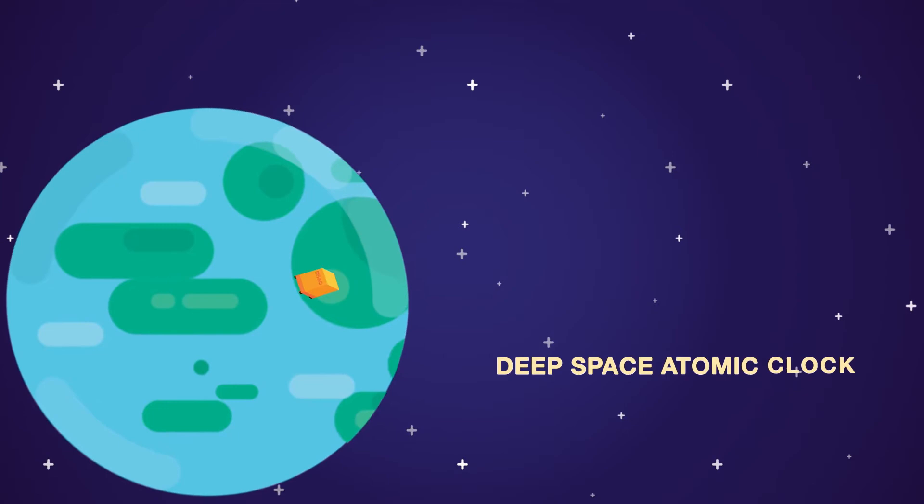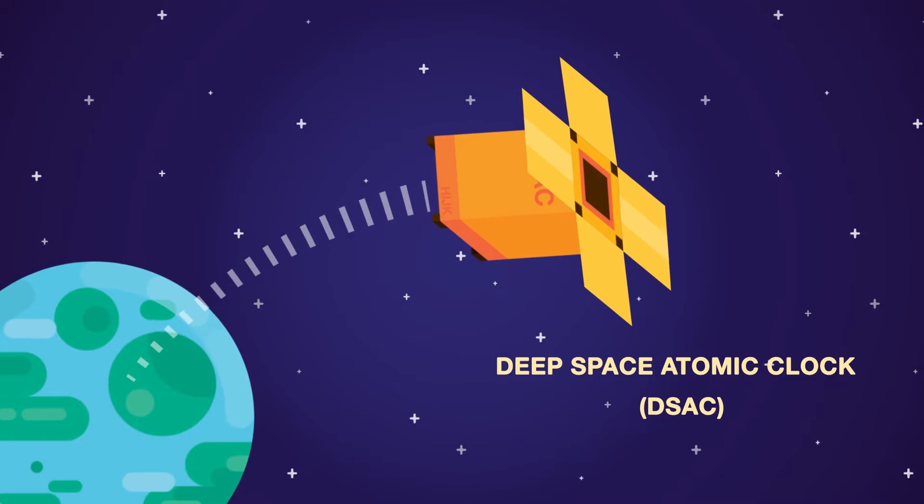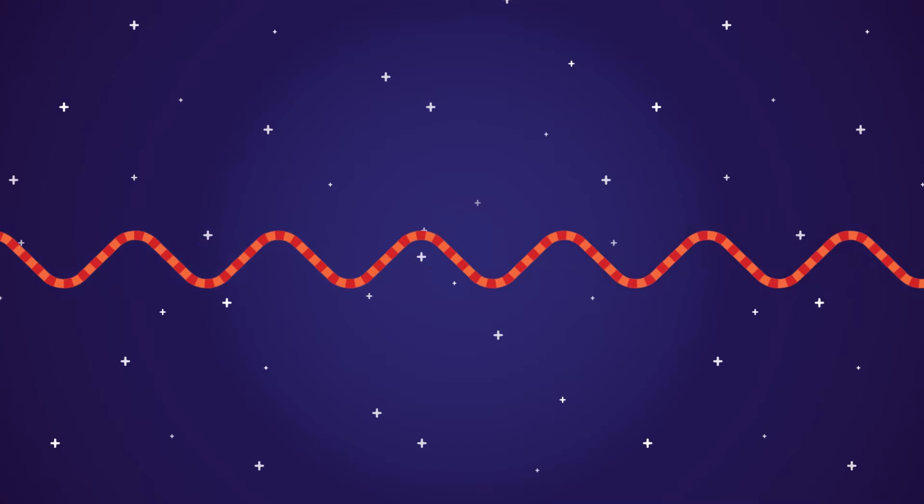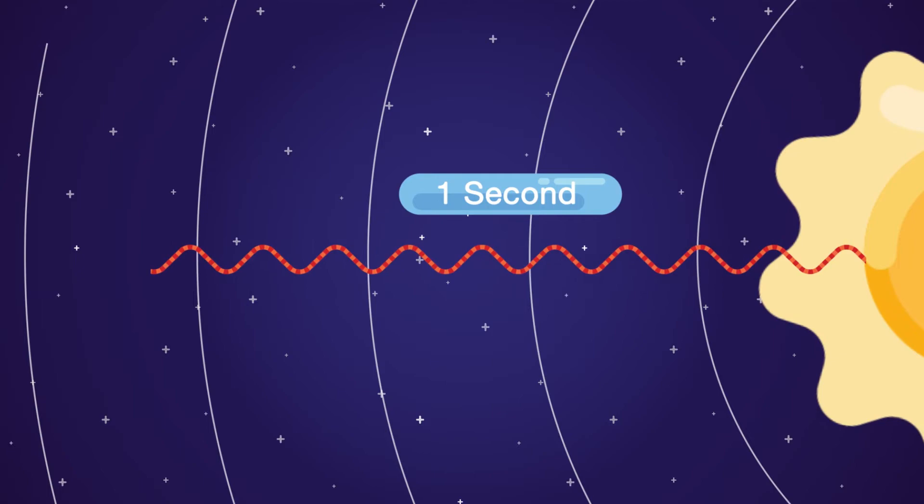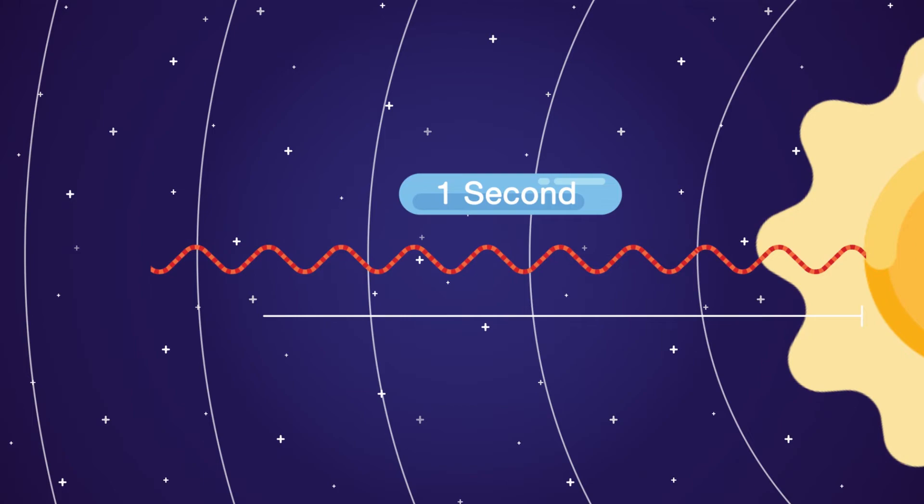A second can also be defined by the propagation of electromagnetic field. One second is the time needed to propagate an electromagnetic field within a vacuum to cover a distance of 299,792,458 meters, or around 300,000 kilometers.